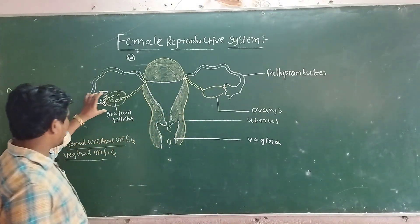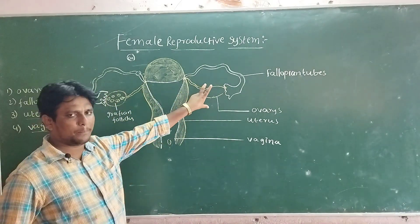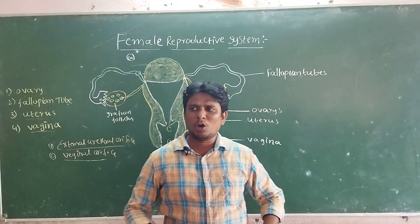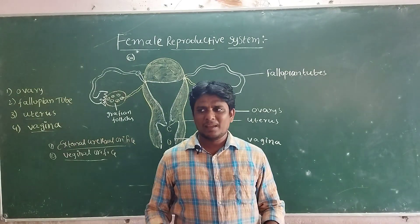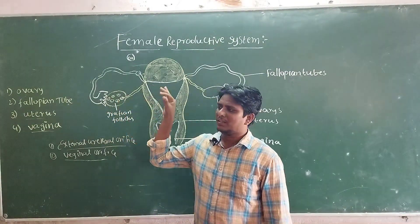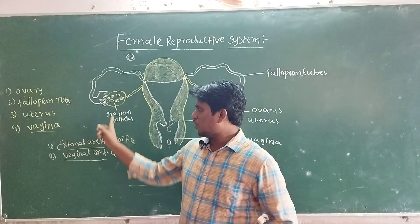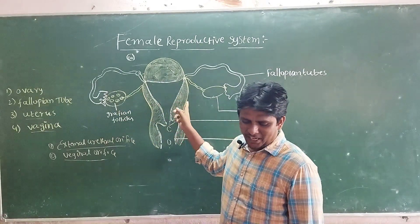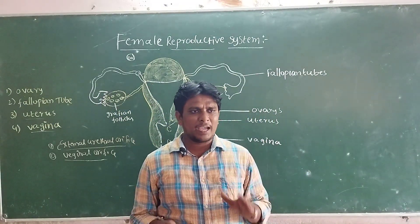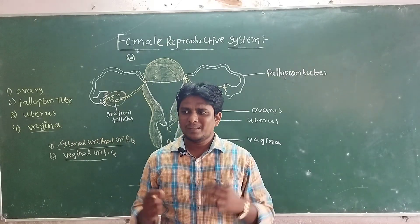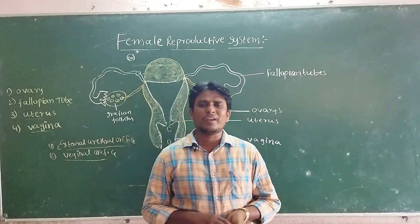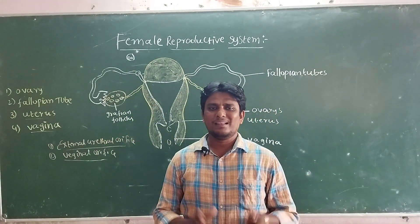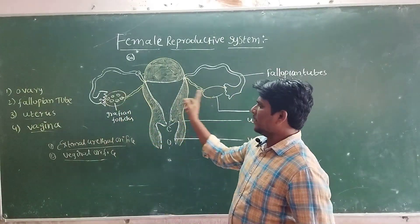First of all, ovaries. Ovaries are located on both the left side and right side, below the abdominal cavity, inside the female body. The ovaries are the female sex organ.